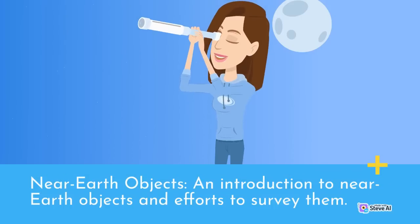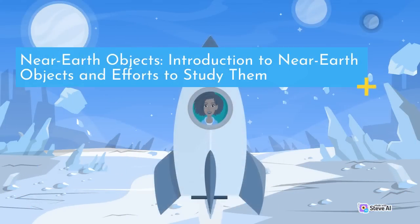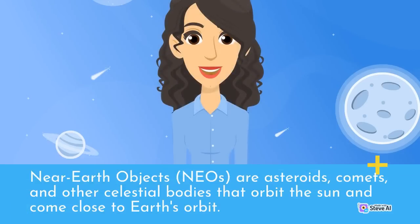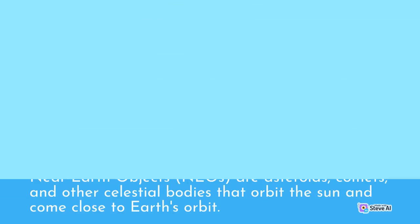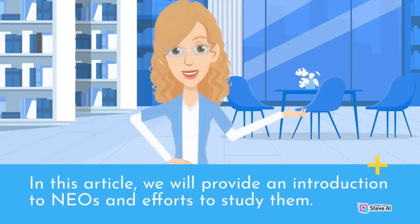Near-Earth Objects, an introduction to near-Earth objects and efforts to survey them. NEOs are asteroids, comets, and other celestial bodies that orbit the Sun close to Earth's orbit. These objects are of interest to scientists and astronomers because of their potential impact on Earth and their potential as resources for future space exploration. In this article, we will provide an introduction to NEOs and efforts to study them.